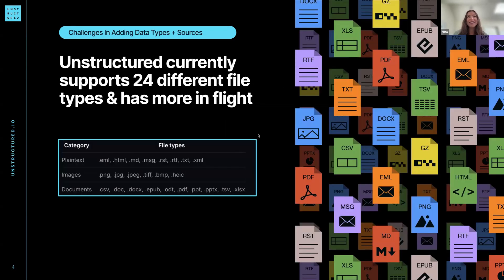I'll talk a little bit about the challenges in adding both data types and sources. We currently support 24 different file types and we have more in flight. That includes a lot of different plain file types, a lot of different images, state file clips, screenshots, and then a lot of different document types — PDFs, PowerPoint.